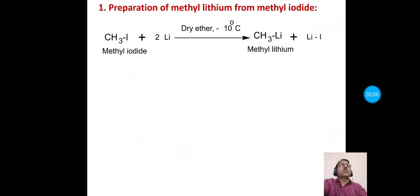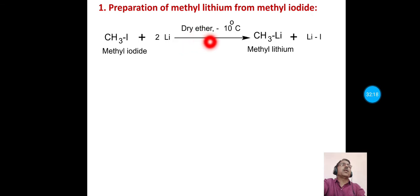Preparation of methyl lithium: methyl lithium is prepared by the action of methyl iodide with lithium metal in dry ether at low temperature (−10°C), forming methyl lithium (CH₃Li) and lithium iodide as a byproduct.